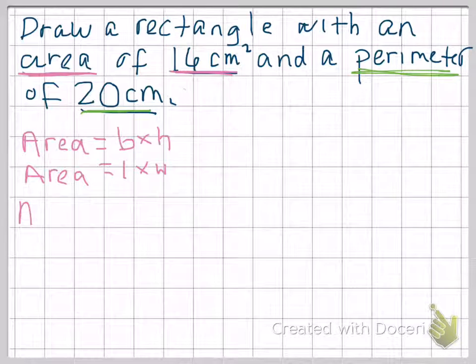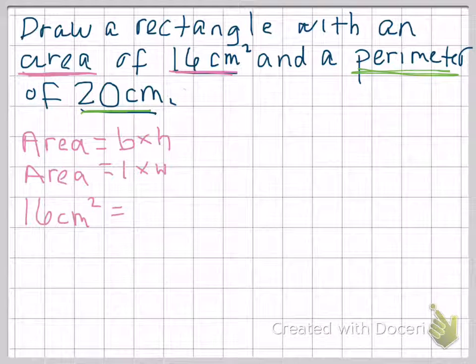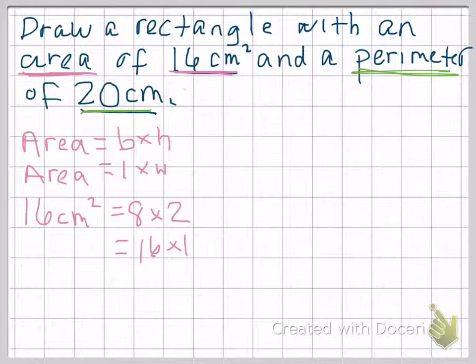This is where the trial and error comes in. So we want to get 16 centimeters squared. So what are some things that we could multiply together to get 16? We could do 8 times 2. We could do 16 times 1. We could do 4 times 4. So these are some dimensions that we could work with with our rectangle. And we can try any of these three. The thing is, we just have to make sure that it matches up to our perimeter of 20 centimeters.